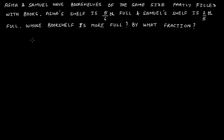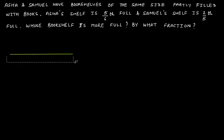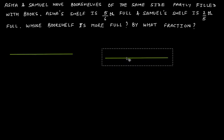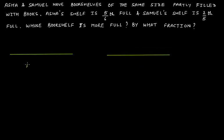Let's draw this out. We have Asha's shelf and Samuel's shelf, both of the same size. Asha's shelf is 5/6 filled with books and Samuel's is 2/5 full.